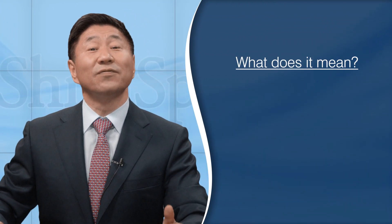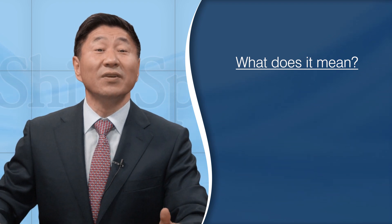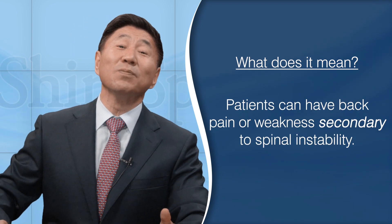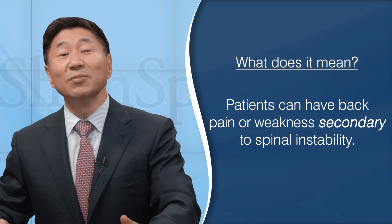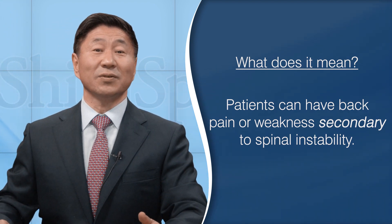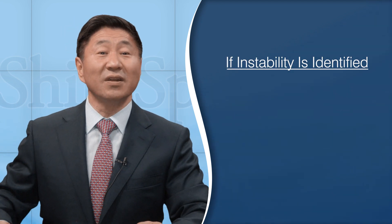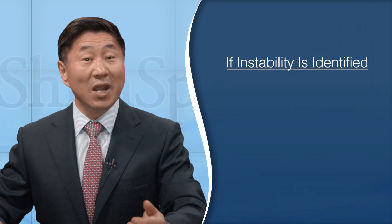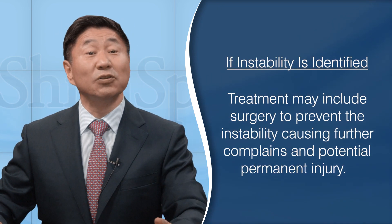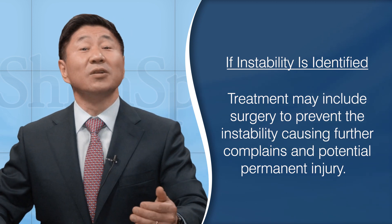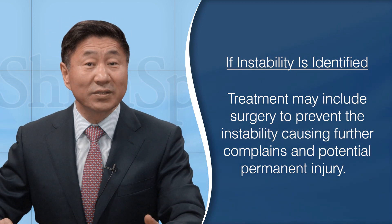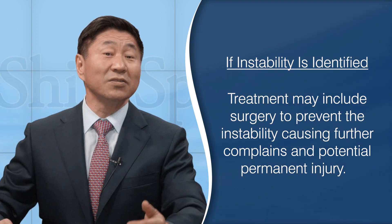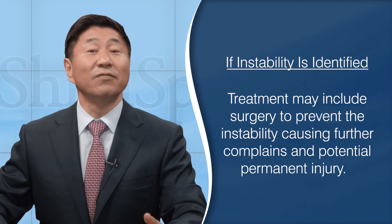In the end, the reason doctors and scientists try to better define this concept of instability is that certain people may have pain to the spine and weakness and numbness secondary to instability. If instability is identified, doctors may recommend treatments that can include possible surgery to prevent the instability from causing further complaints and to prevent potential permanent injuries from this condition.